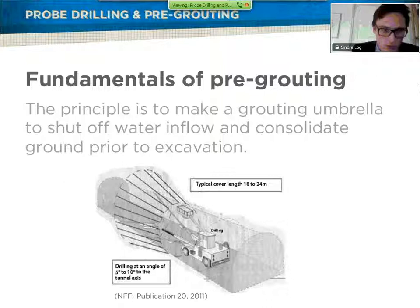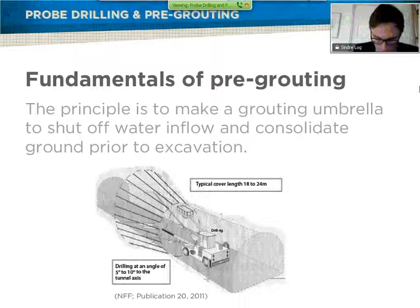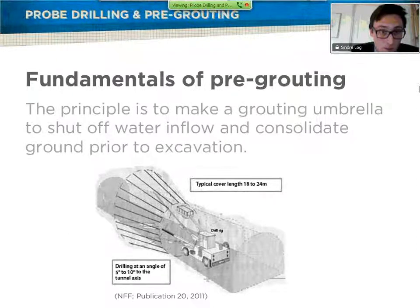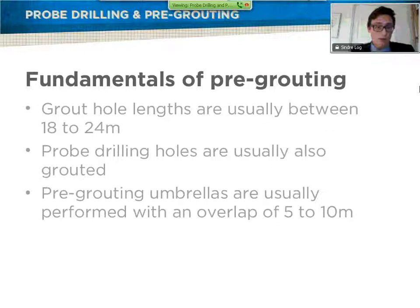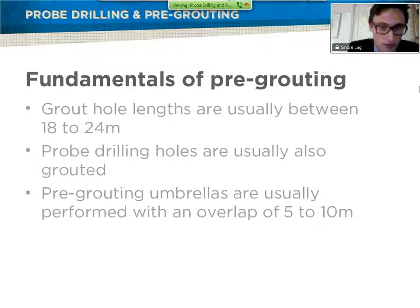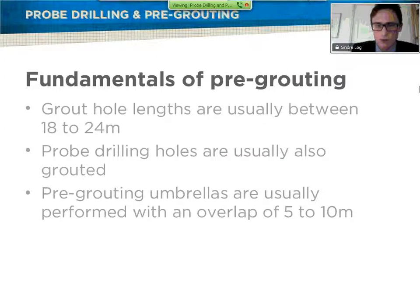Usually, the decisive criteria when grouting is grouting pressure, because it tells you something about how much grout you put in, how much of the discontinuities you fill, and the numbers illustrated in the pictures. The grout hole total lengths are usually between 18 and 24 meters. You have an overlap between 5 to 10 meters.